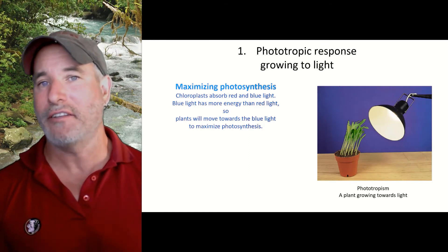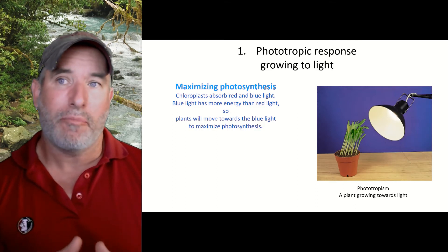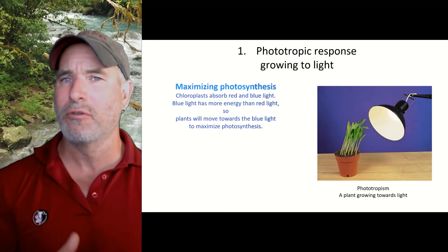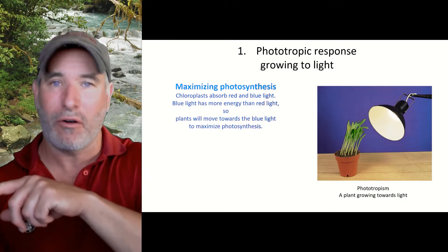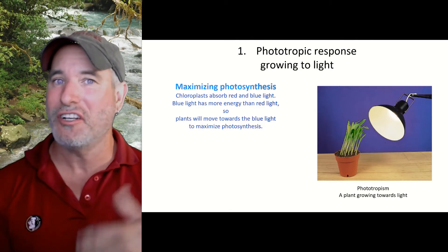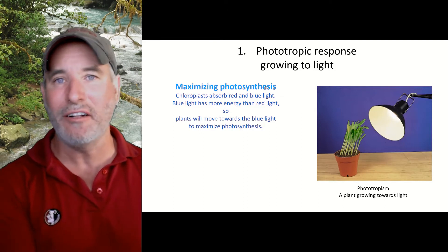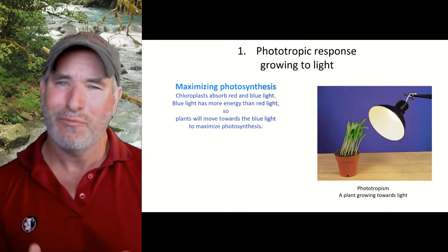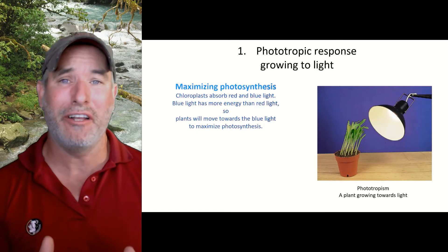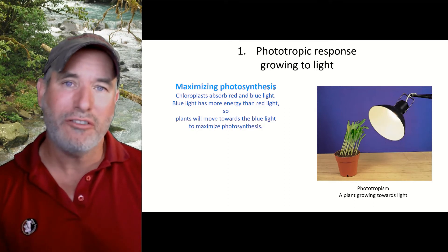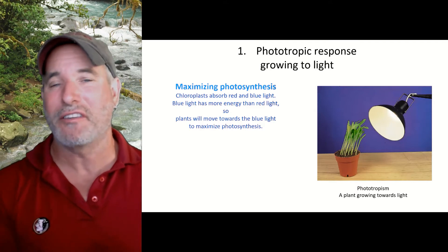Chloroplasts can absorb blue light and red light, but not so much in the green wavelength. If you're a plant, you want to move toward the bluish light. Why move toward blue light and not necessarily red light? Blue light has more energy than red light. Light moves in waves, and the shorter the wavelength, the more energy is in that light. Blue light, which is about 350 nanometers or so, contains more energy than red light, which is around 700 nanometers. Plants will want to grow toward the light that has the most energy. A nanometer is a billionth of a meter — a protein is also about a billionth of a meter in size, so you have a protein that's going to respond to something about the same size as it.